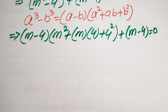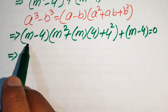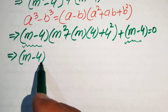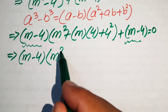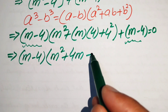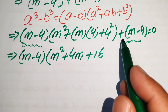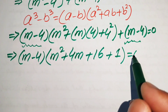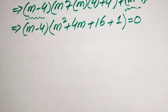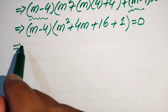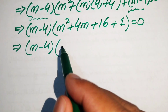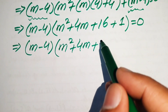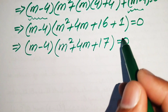We observe that (m - 4) is a common factor in all terms. Factoring it out, we get (m - 4)(m² + 4m + 16 + 1) = 0. Combining like terms, this simplifies to (m - 4)(m² + 4m + 17) = 0.